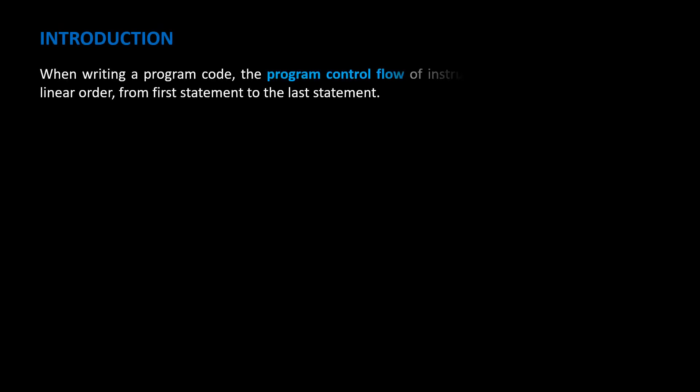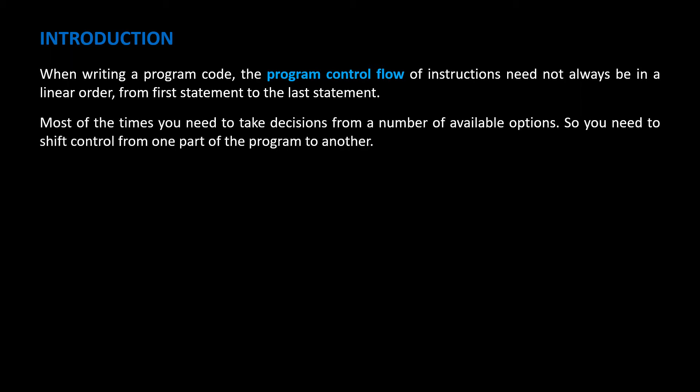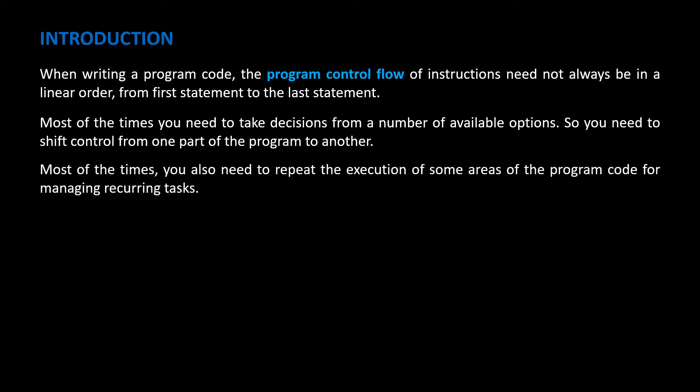When writing program code, the program control flow of instructions need not always be in a linear order — that is, from the first statement to the last statement. Most of the times you need to take decisions from a number of available options, so you need to shift control from one part of the program to another. Most of the times you also need to repeat the execution of some areas of the program code for managing recurring tasks.